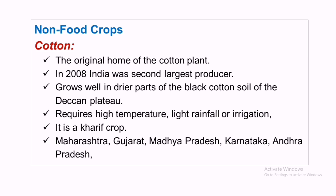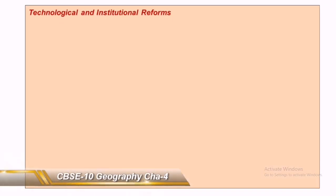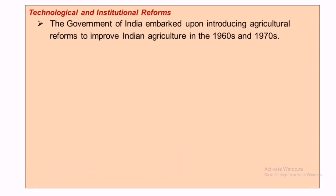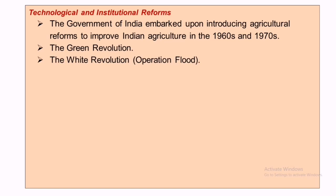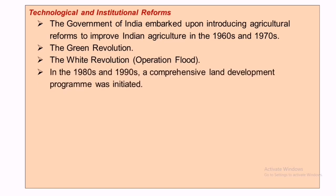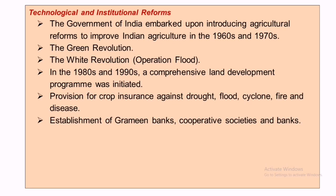An important question: what are the technological and institutional reforms set by the Government of India for the welfare of agriculture and farmers? The government introduced agricultural reforms to improve Indian agriculture in the 1960s and 1970s through the Green Revolution and the White Revolution. In the 1980s and 1990s, a comprehensive land development program was initiated. There are provisions for crop insurance against drought, flood, and cyclones, and Grameen Banks, cooperative banks, and other banks were established to help farmers.